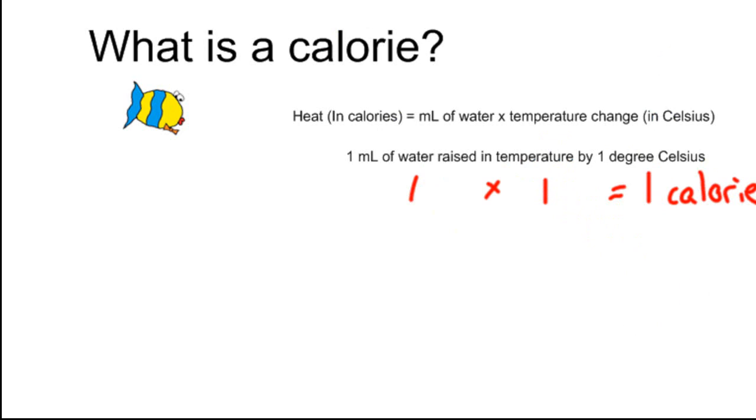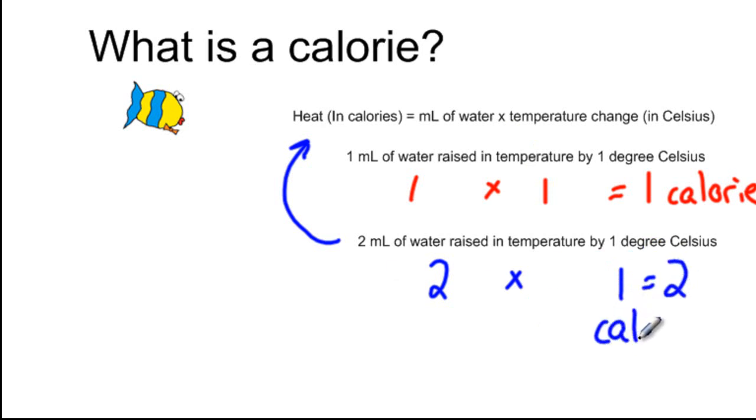Next, let's take a look at this one. Let's say you've got two milliliters of water raised in temperature by one degree Celsius. Well, don't forget to look at your formula. Your heat in calories is equal to your milliliters of water. Here, that's two. And your temperature change is one. You multiply the two together. Two times one is two calories.